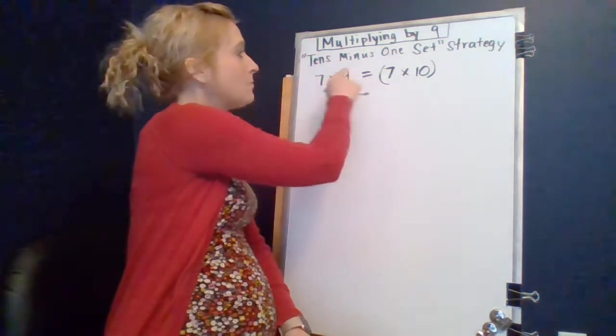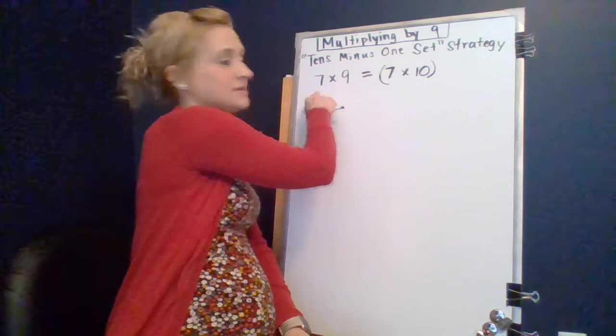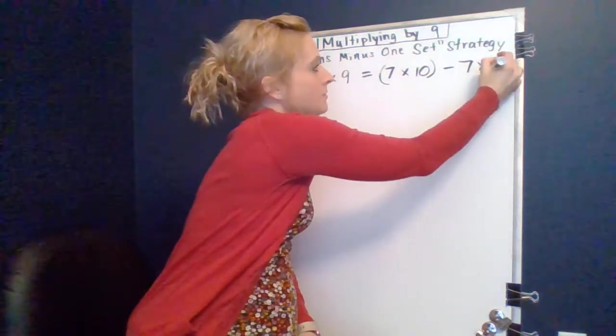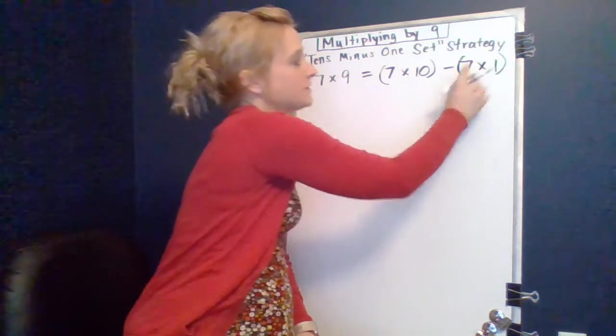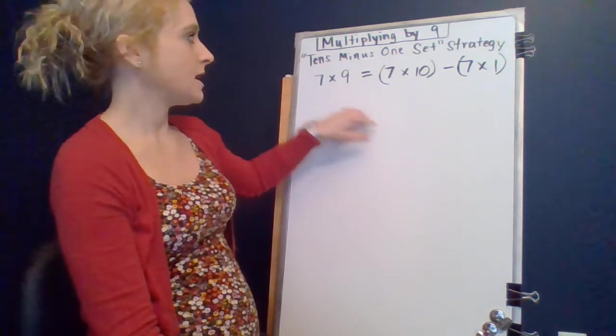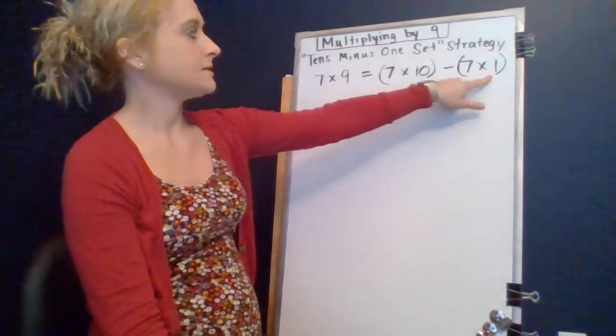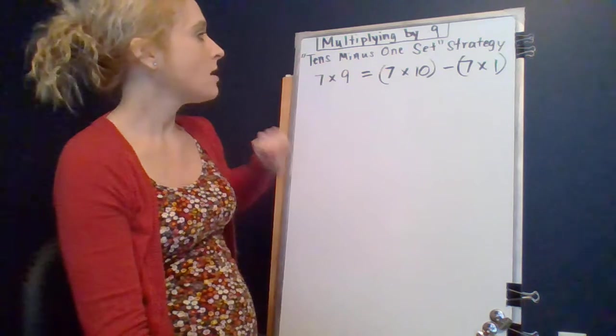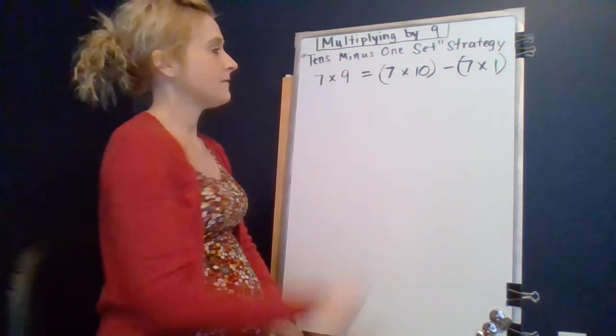But then we're going to need to minus one set of seven. I'm going to model that with the seven times one fact as well so that you can see that ten minus that one set is nine sets.